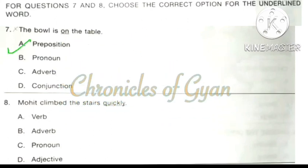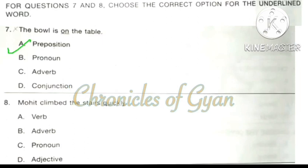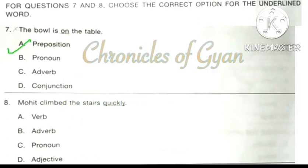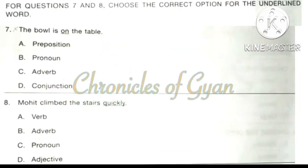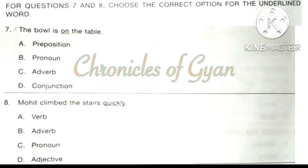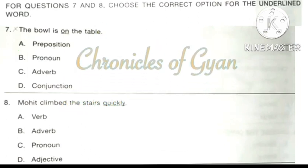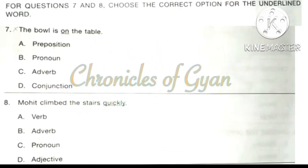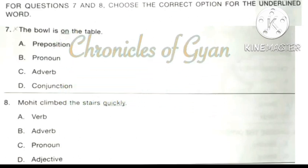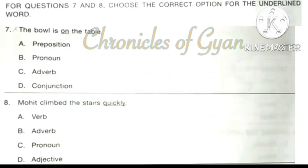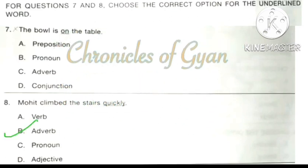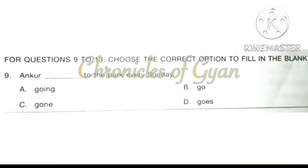Question 8: Mohit climbed the stairs quickly. The underlined word 'quickly' is an adverb, which we get from the adjective 'quick'. The correct answer is option B: Adverb.